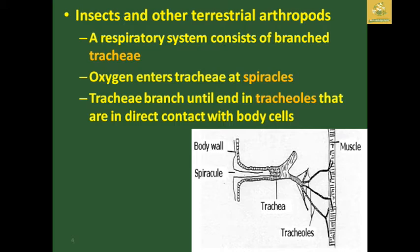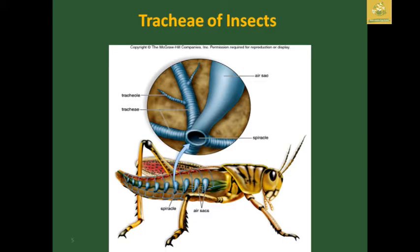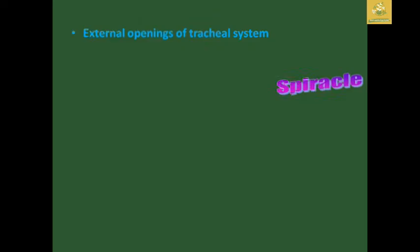In insects and other tracheal arthropods, the respiratory system consists of branched trachea through which oxygen enters via holes known as spiracles. The trachea branch until they end in tracheoles that are in direct contact with the body cells — that is where respiration takes place. The spiracle holes, trachea, and tracheoles are present along with air sacs in the insect body.